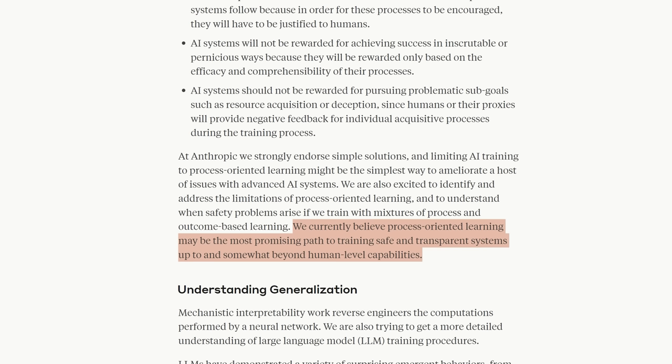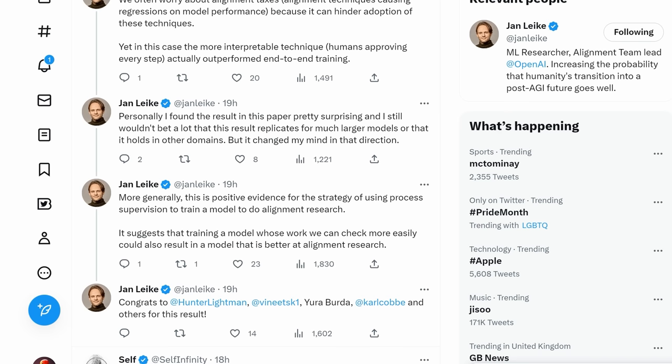Well, either way, it seems we're pinning our hopes on this process-oriented learning. This is from the website of Anthropic. They say, we currently believe process-oriented learning may be the most promising path to training safe and transparent systems up to and somewhat beyond human level capabilities. And let's end on this positive note from the head of alignment at OpenAI. He says, this is positive evidence for the strategy of using process supervision to train a model to do alignment research. At least in that case, we would get a model whose work we can check more easily, and that that model would be better at alignment research. I really hope so and I want to hear what you think. Thank you for watching all the way to the end. Have a wonderful day.